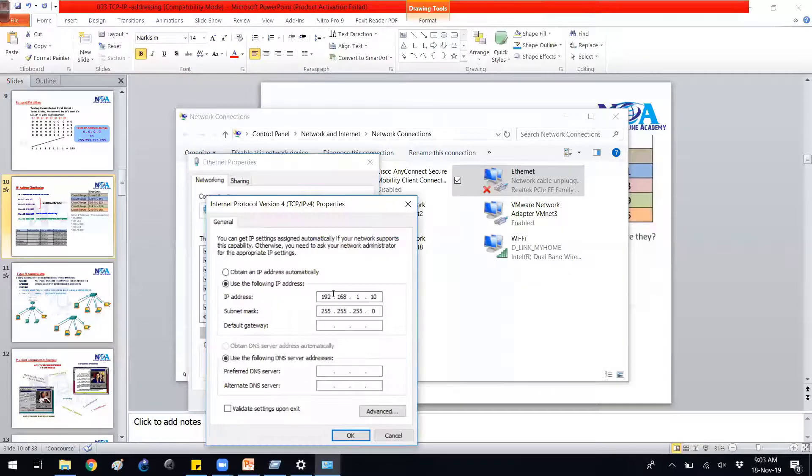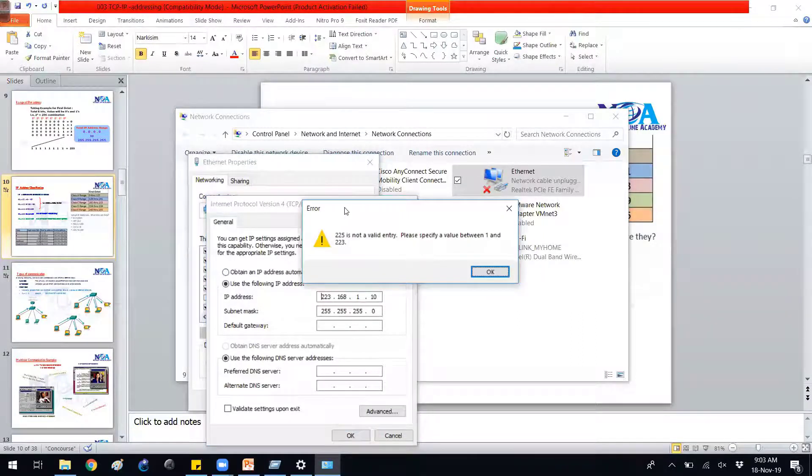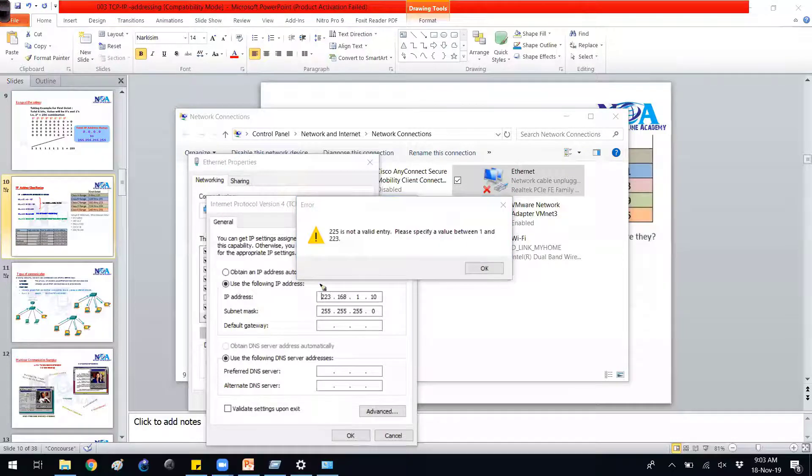If I try to give any ABC classes, it will accept. So if I try to give any address like 225, you can see it clearly says that any address if you are typing 225, 225 comes under the class D. So this is not a valid entry. Please specify the values only between 1 and 223. 0 is not used.